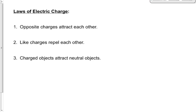Second law: like charges repel each other. Positive repels positive, and negative pushes away negative. Like two people who can't get along because they're so much alike — they push each other away. Third law — be careful with the last word: charged objects attract neutral objects. Protons don't attract neutrons electrically — they do by the strong nuclear force, but not electrically. It needs to be a neutral object containing both protons and electrons. A neutron alone isn't attracted to anything electrically.